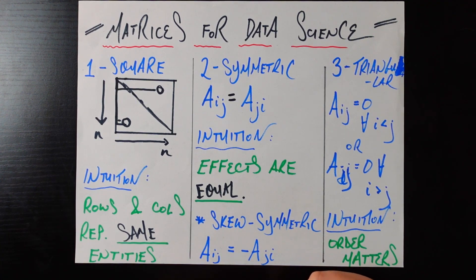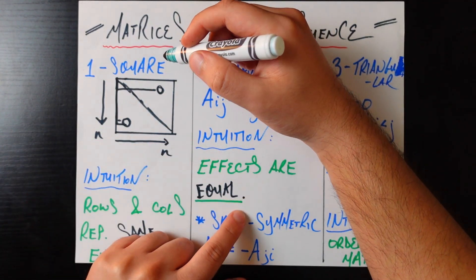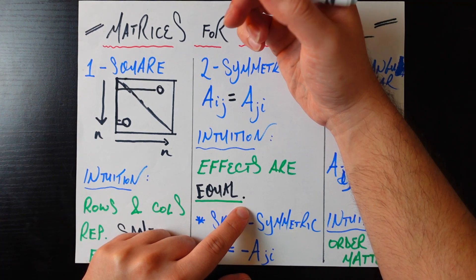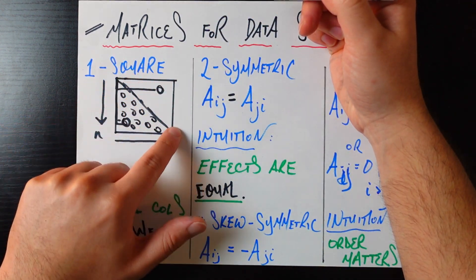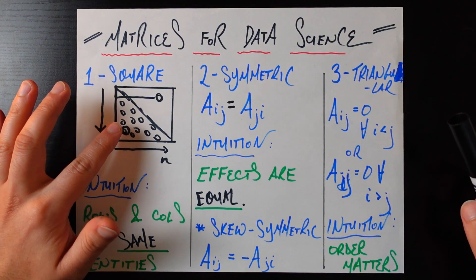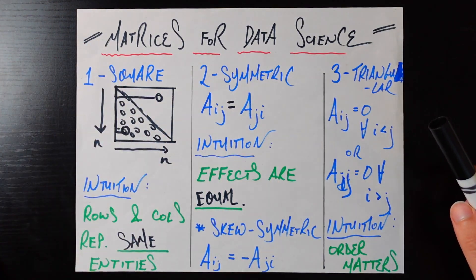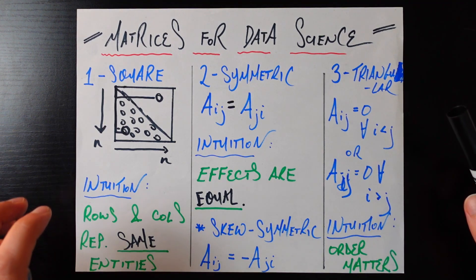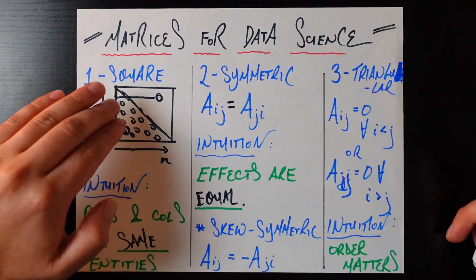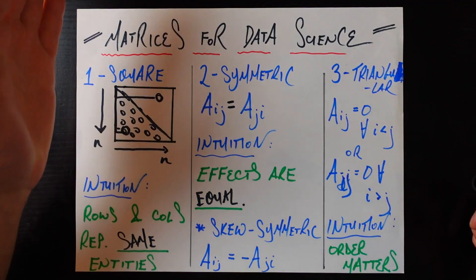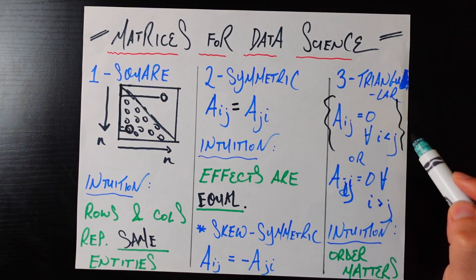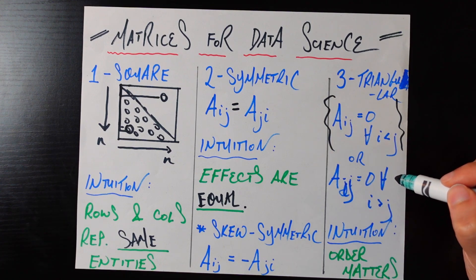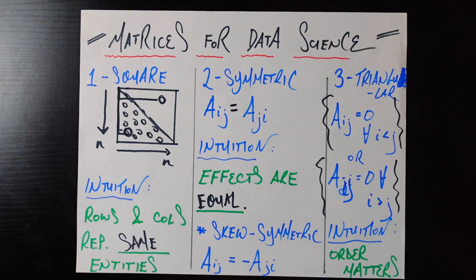That brings us to triangular matrices. Triangular matrices come in two flavors: upper triangular and lower triangular. A triangular matrix is going to have zeros in one half. An upper triangular matrix has zeros below the diagonal — the diagonal and everything above it are allowed to be non-zero. A lower triangular matrix is the opposite: the diagonal and everything below it can be non-zero, but everything above the diagonal must be zero. Formally: a_ij = 0 for all i less than j (upper), or a_ij = 0 for all i greater than j (lower).